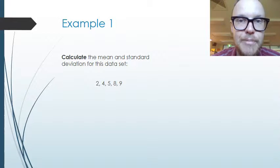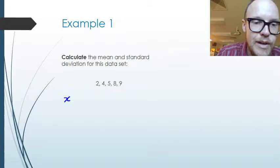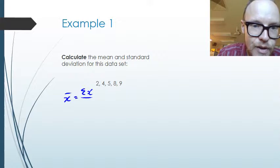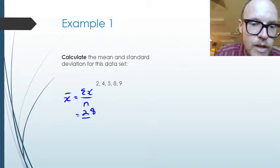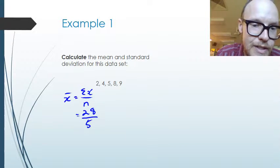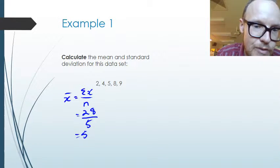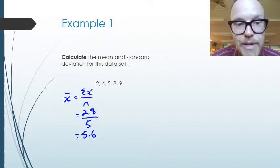Let's look at an example of calculating the mean and standard deviation for a data set. To calculate the mean, X-bar equals the sum of X values divided by N. Adding up all the X values gives 28, dividing by the number of values — which is 5 — gives a mean of 5.6.